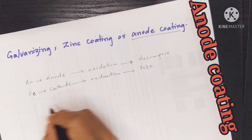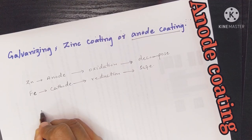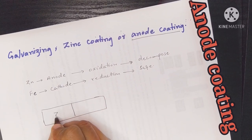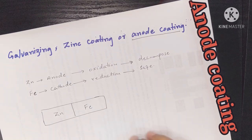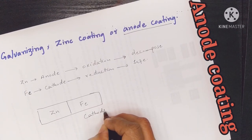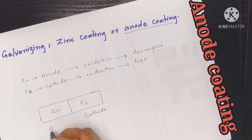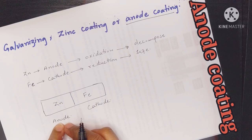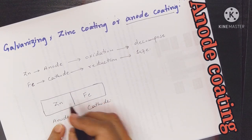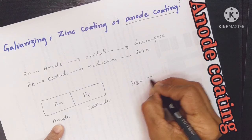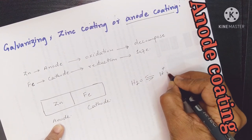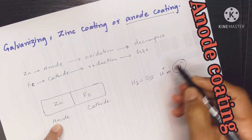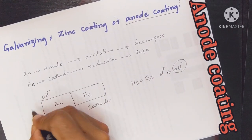We have two metals — zinc and iron. Iron acts as the cathode and zinc acts as the anode. Anions move from water toward the zinc surface, involving hydrogen and hydroxide ions.